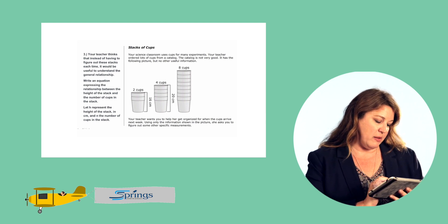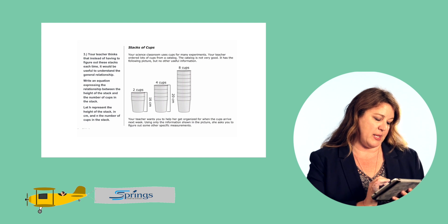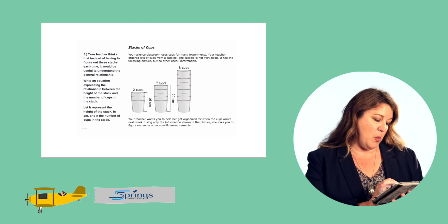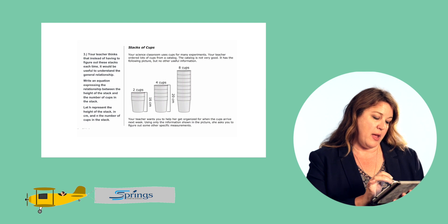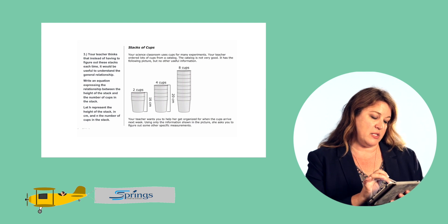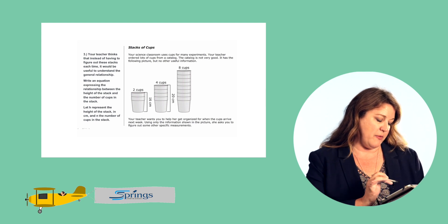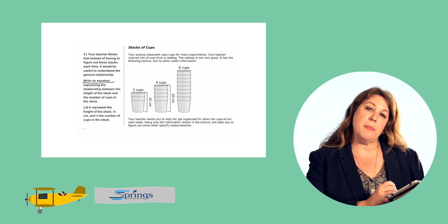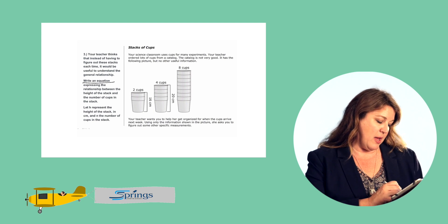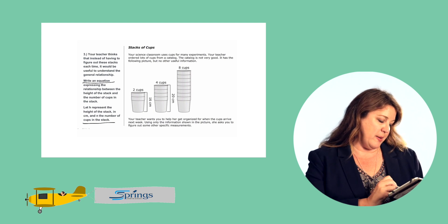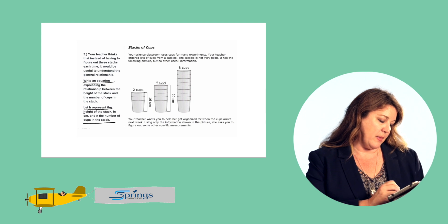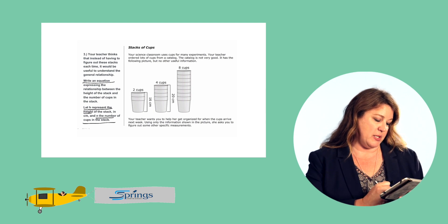Let H represent the height of the stack in centimeters and n the number of cups in the stack. We're going to write an equation, and it gives us some initial information about the variables for that equation. H represents the height and n represents the number of cups in each stack.